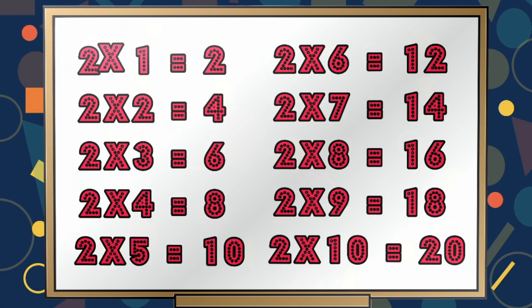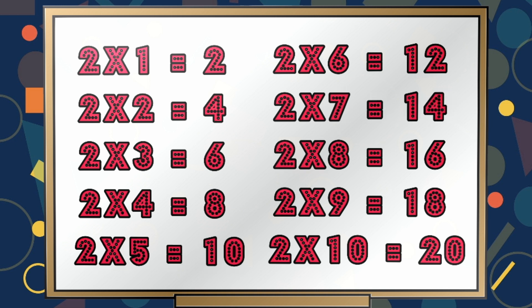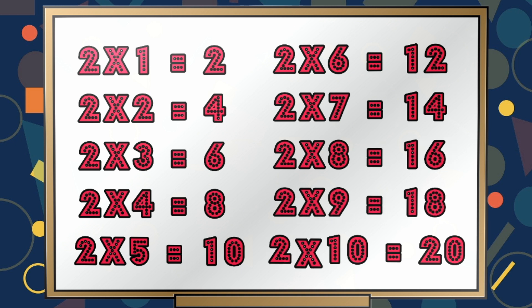2 1s are 2. 2 2s are 4. 2 3s are 6. 2 4s are 8. 2 5s are 10. 2 6s are 12. 2 7s are 14. 2 8s are 16. 2 9s are 18.